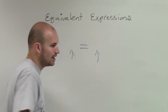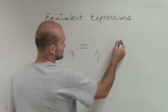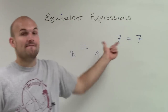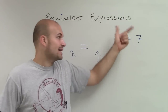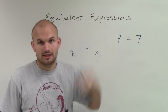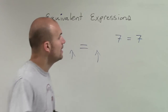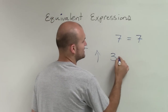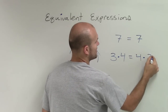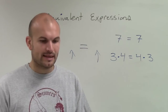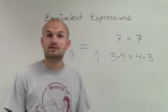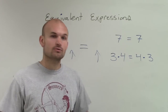So let's take a look at a couple of equivalent expressions. 7 equals 7. So therefore I can say that the value on the left side of the equal sign is equal to the value of the expression on the right side, which is 7 equals 7. I could do 3 times 4 is equal to 4 times 3. This is when we use the commutative property. The values on the left and right side are equal to each other.